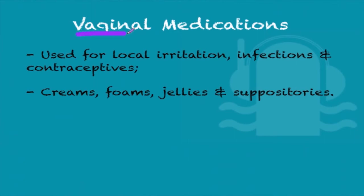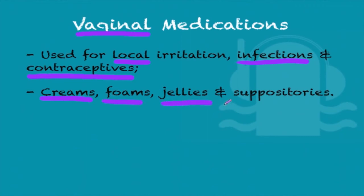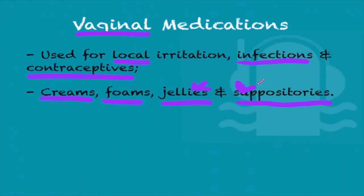The next slide is vaginal medications. They're used for local irritation, infections, and can also be used as contraceptives. They come in the form of creams, foams, jellies, and suppositories. Suppositories are almost like a capsule — hard and preformed to the shape of the vagina. You insert it with your fingers and it will dissolve and release the drug in the vagina.